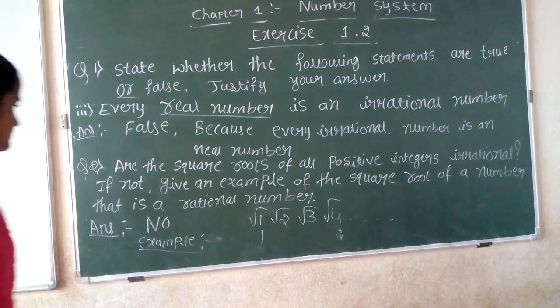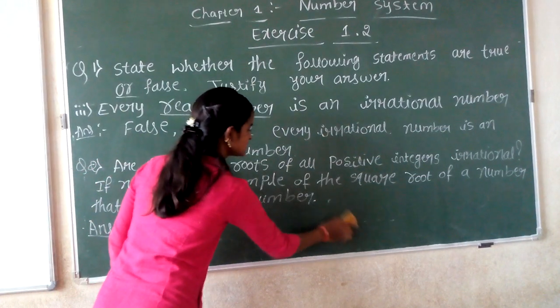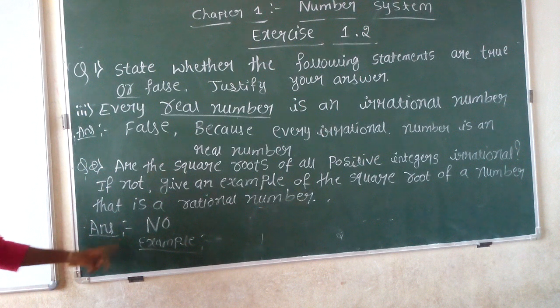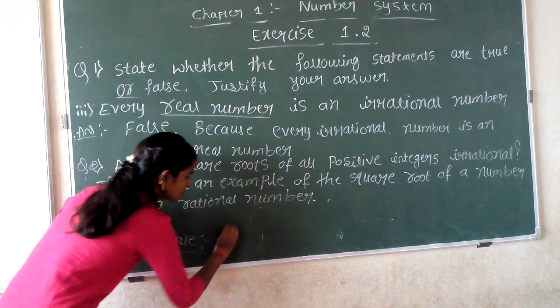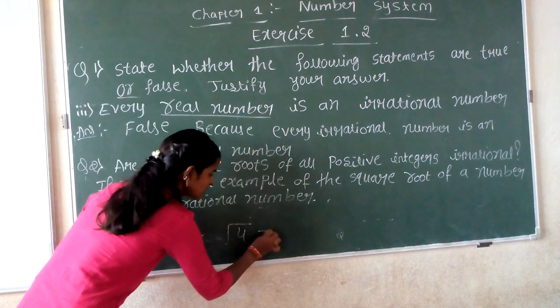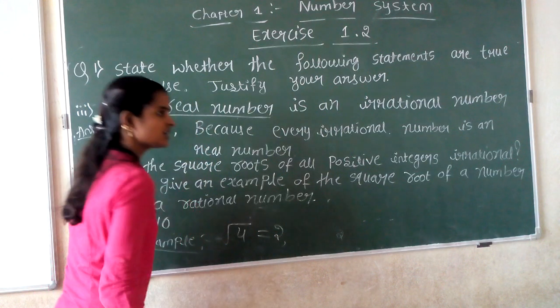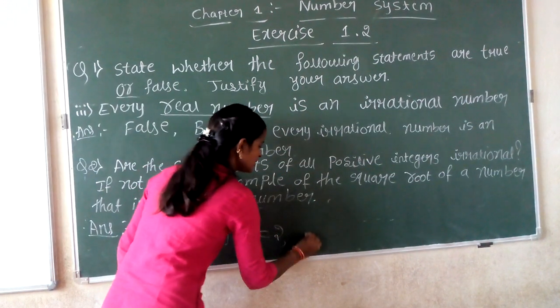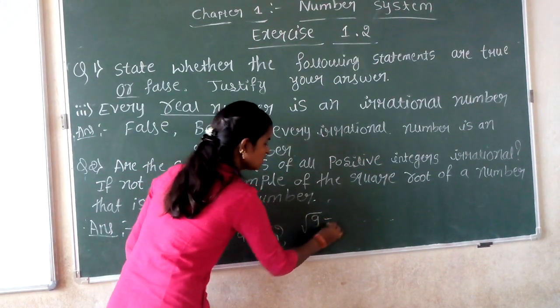Therefore, the second question answer is no. Because, for example, root 4 is a perfect square; root 4 will be 2. Similarly, we have to take another example, root 9. Root 9 is also perfect.